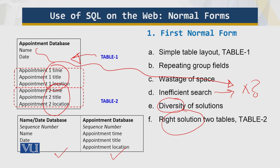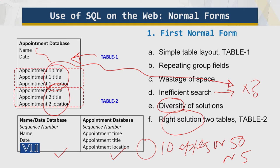With two tables, there is no limit on the number of appointments — we don't have to pre-assign space for 5, 10, or 50 appointments. Rows are simply added in the appointment table, while the person's name is stored separately. There is no ambiguity because we have a sequence number as the primary key, which uniquely identifies records and allows us to join the tables. That is why we need the First Normal Form.